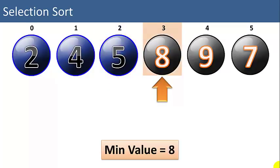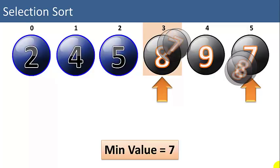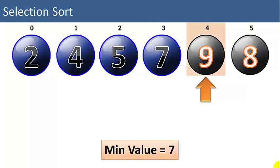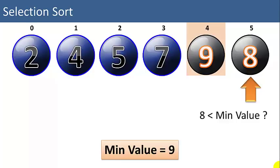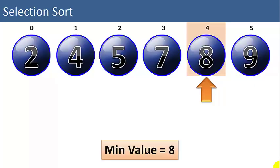We move on to the 8 and set our min value to 8. Is 9 less than the min value? No. Is 7 less than min value? Yes — 7 is less than 8, so we mark the min value as 7. We're going to swap the 7 with the 8. Now we can mark the 7 as sorted. We have 2 remaining items, so we'll set min value equal to 9. We compare 9 to 8 — is 8 less than the min value? Yes, it is. So we need to swap these last 2 items. After the swap, the list is fully sorted.